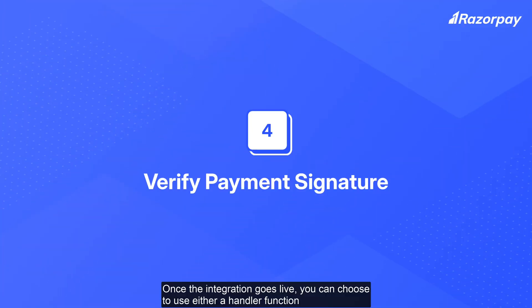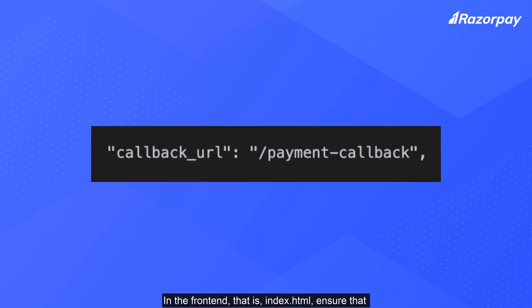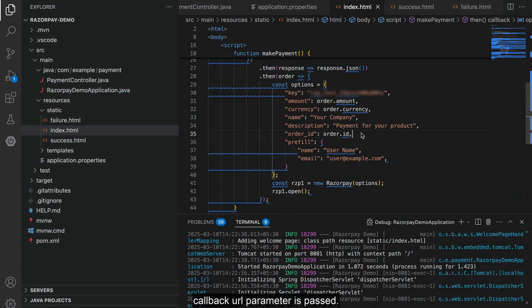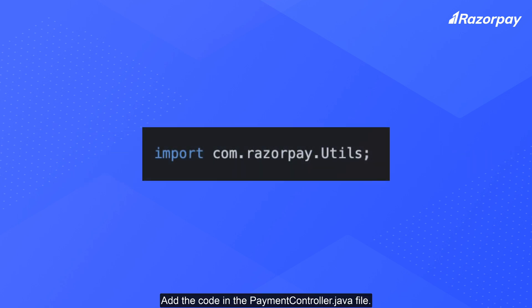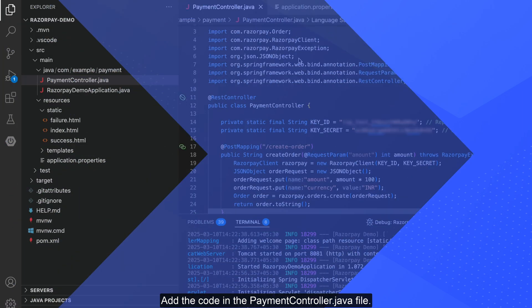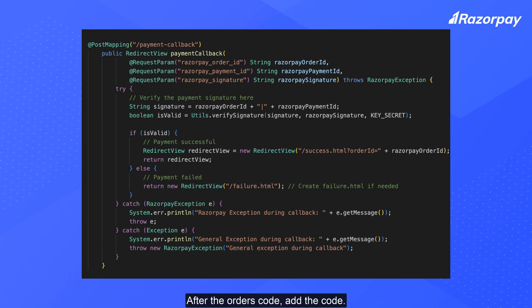Once the integration goes live, you can choose to use either a handler function or a callback URL to process payment responses. In this video, we are using a callback URL. In the frontend, that is index.html, ensure that the callback URL parameter is passed. Razorpay sends a callback to the sample app server. We'll implement a route to handle this callback, verify the payment, and update the transaction status. Add the following code in the paymentcontroller.java file — in the imports section, add the code, and after the orders code, add the code.